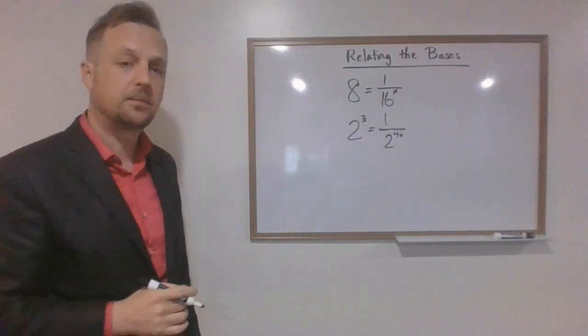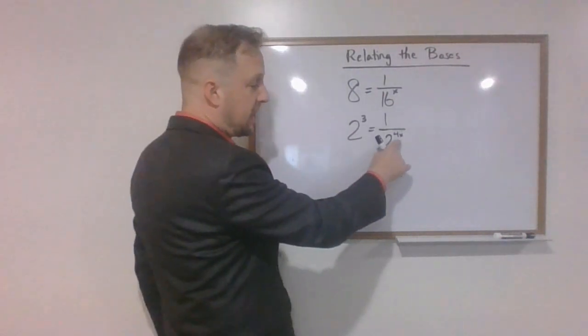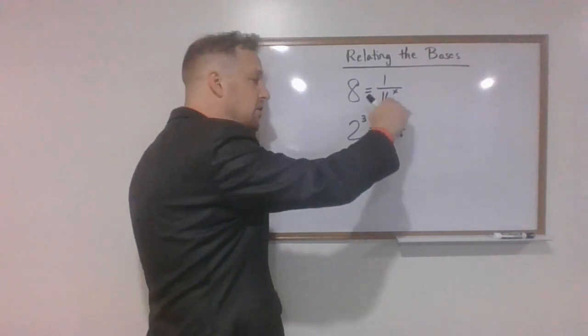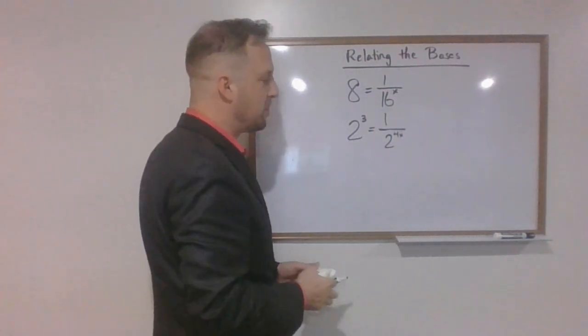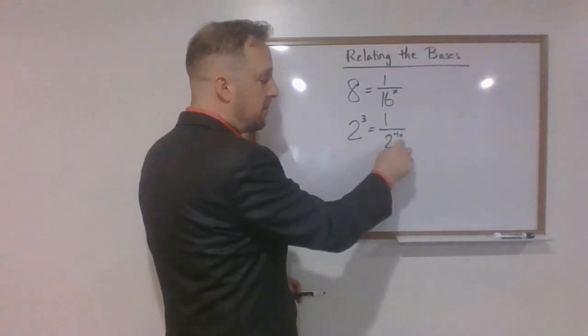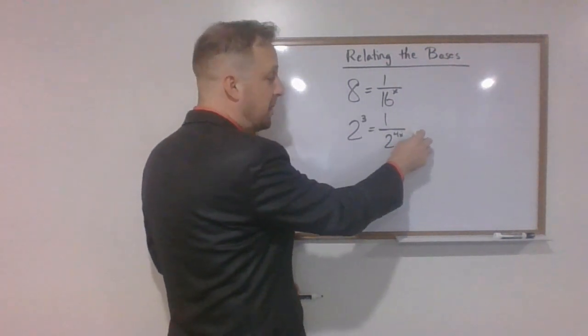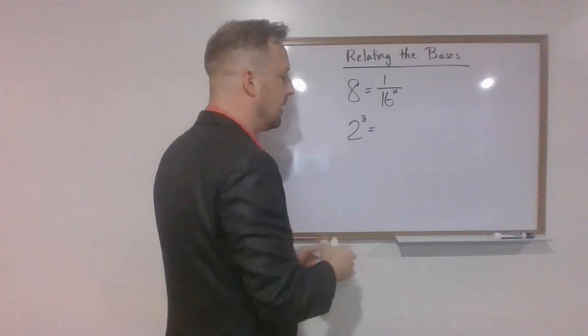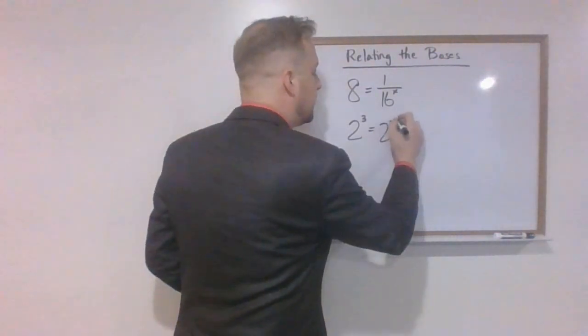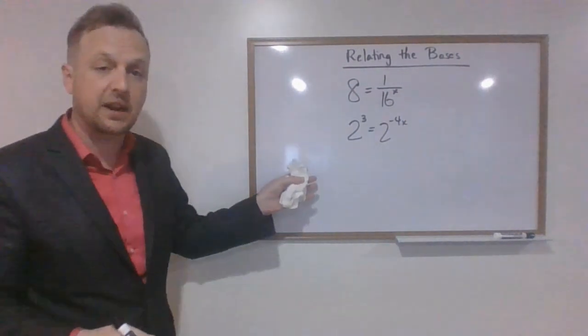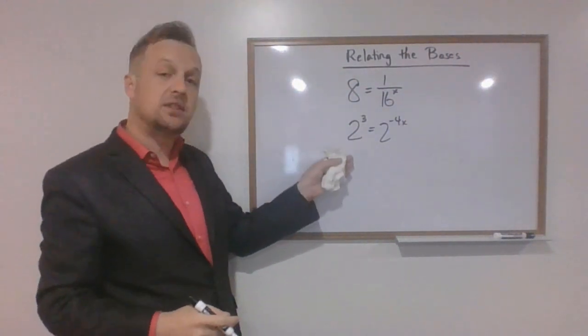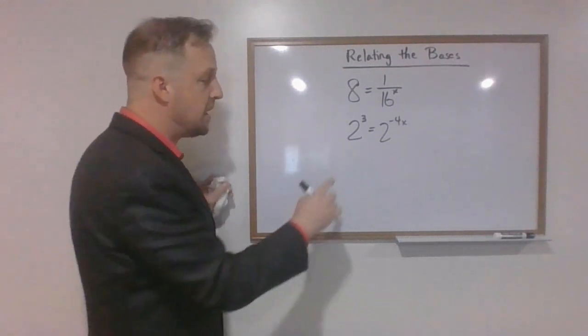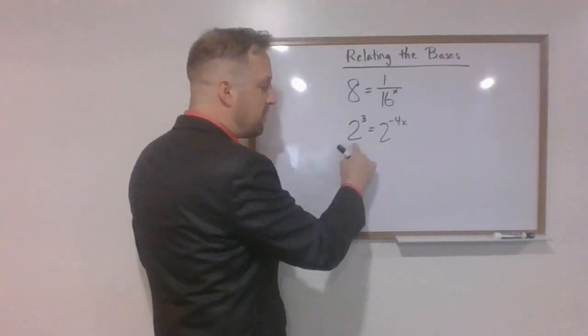Which is then raised to the x power. Hopefully everybody gets what's going on there. Now remember, when I raise a power to a power, that means that I can just multiply those two. So this becomes 2 to the 4x. Now I've got an exponent on the bottom of a fraction, so I can move that to the numerator of the fraction by turning this into a negative exponent. Remember that negative exponent street runs both ways, so this now becomes 2 to the negative 4x.